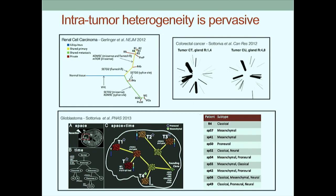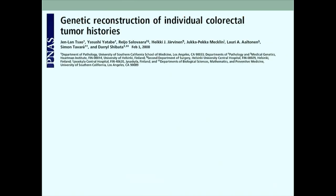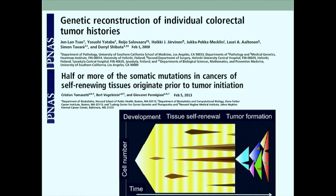This raises the question: how much of intratumor heterogeneity is actually functional? And how can we leverage patterns of heterogeneity to interrogate the evolutionary dynamics of a tumor? Tumor progression is an evolutionary process. A very seminal study from Daryl Shibata and Simon Tavare demonstrated, using microsatellite-based typing, that more than half of all somatic alterations in colorectal tumors happen prior to transformation. This was subsequently followed up using next-generation sequencing, and this conclusion is in the title of those papers.